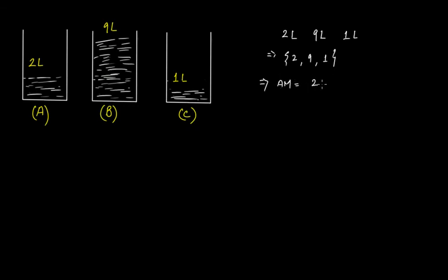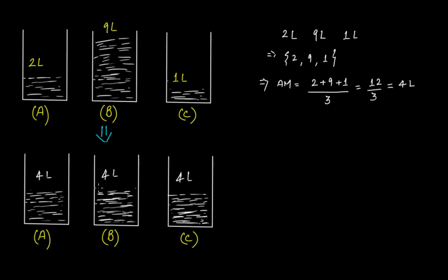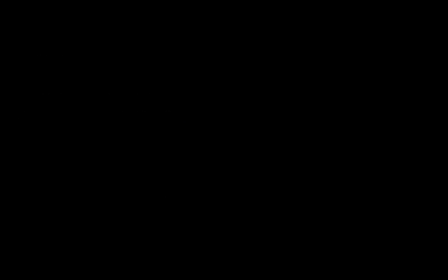Two plus nine plus one divided by three gives you twelve divided by three, which gives you four. That is four liters — each container should contain four liters of milk.